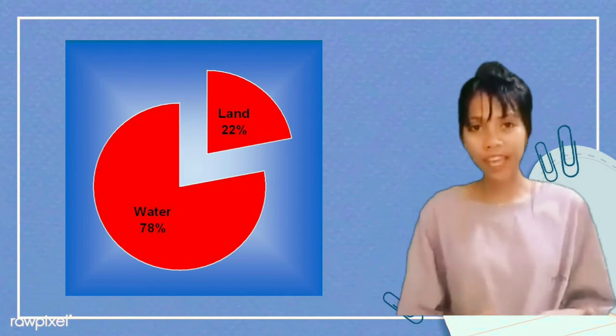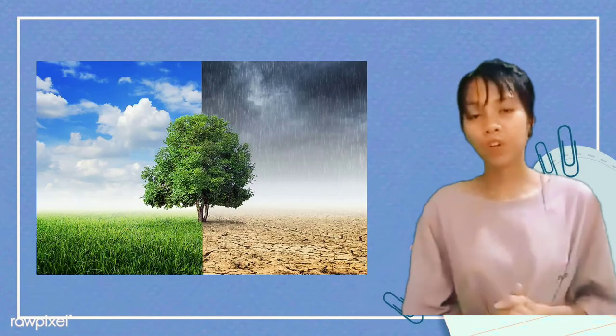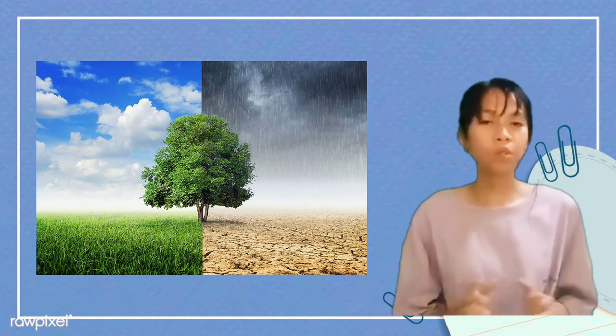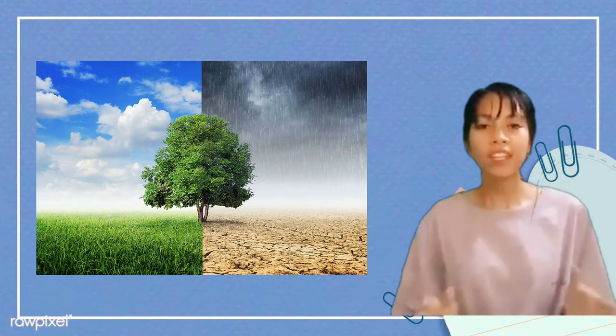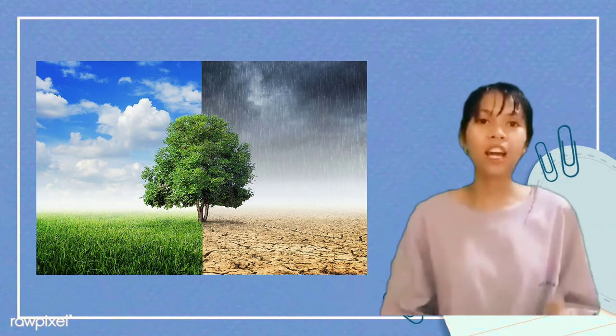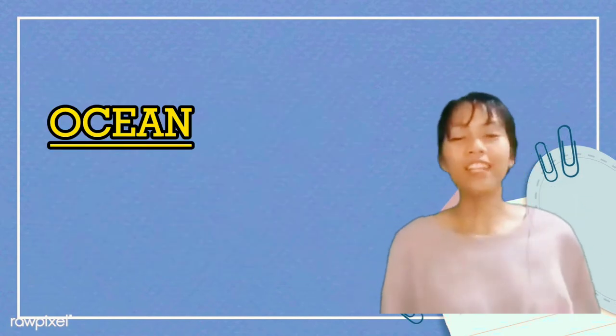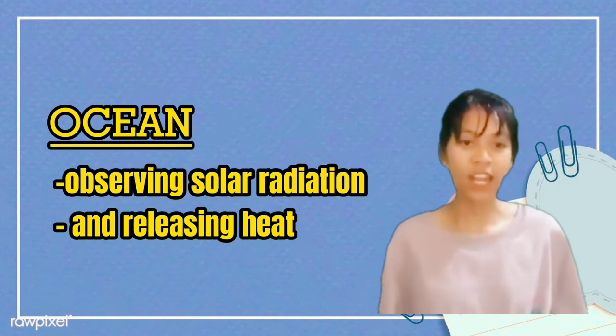The ocean is part of the biggest water bodies, covering 70% of our earth's surface. The ocean is a significant influence on our weather and climate. This great reservoir continuously exchanges heat, moisture, and carbon with the atmosphere, driving our weather patterns and influencing the slow and subtle changes in our climate. The ocean influences climate by absorbing solar radiation and releasing heat needed to drive atmospheric circulation.